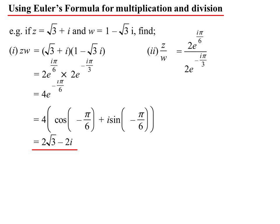z divided by w, similar thing. Now I'm just using index laws. 2 divided by 2 is 1, and I would subtract the powers. When we divide, we subtract the powers: i pi on 2. Pi on 2, so I know that one is simply i. Argument of pi on 2 must be purely imaginary, and its modulus is 1, so it's i.